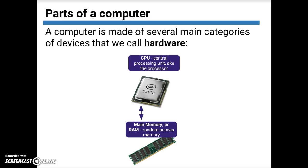The CPU works really closely with something called main memory, or RAM — random access memory. Main memory is special because it stores information but it can give it back really quickly. An analogy for main memory might be a whiteboard. We can write on our whiteboard to keep things there for a short time. I can only keep a little bit of information on a whiteboard — that's what RAM is for. And when I turn my computer off, my RAM gets erased. It's all gone.